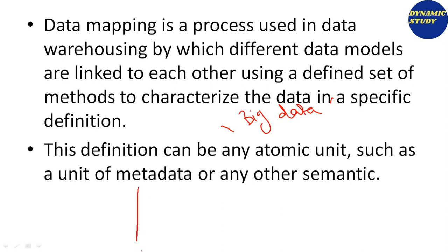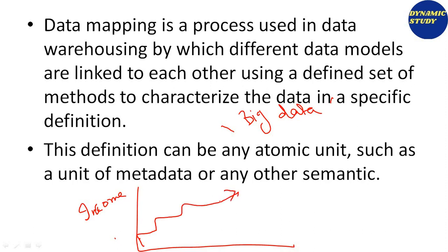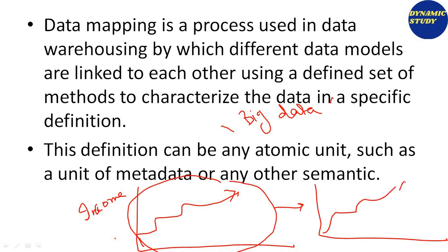Let me explain with an example. Suppose you have a data available — someone's income data, say a family's income data with five earning members. If we compare this family's income data with another family's income data, we call this process of linking data — data mapping.